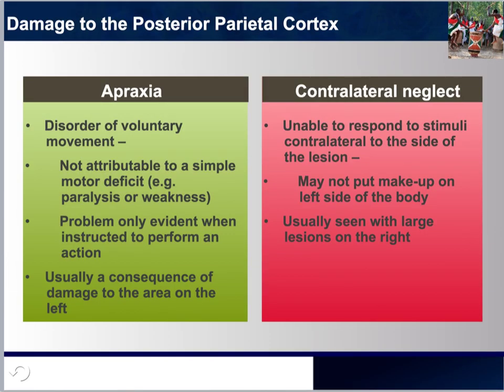Damage to the posterior parietal cortex can produce a variety of deficits, including some in the perception and memory of spatial relationships, inaccurate reaching and grasping, and the control of eye movement and attention. However, apraxia and contralateral neglect are the most striking consequences of damage to the posterior parietal cortex.